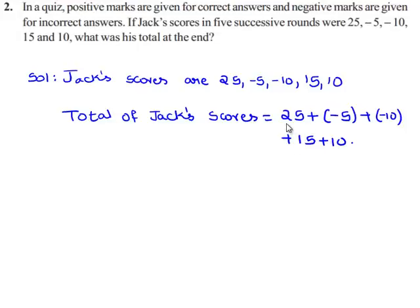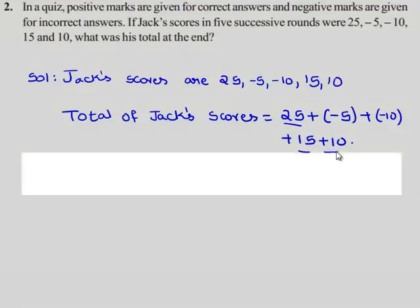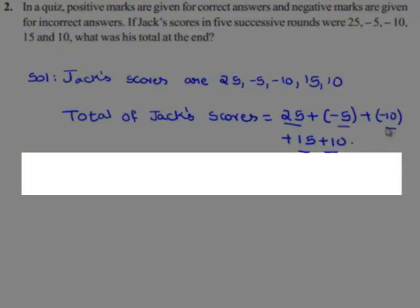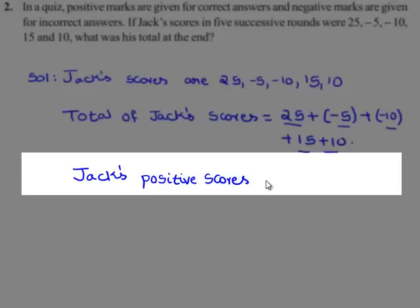Here, we will collect all the positive values and the negative values and add them up. Now, Jack's positive scores are 25, 15 and 10.